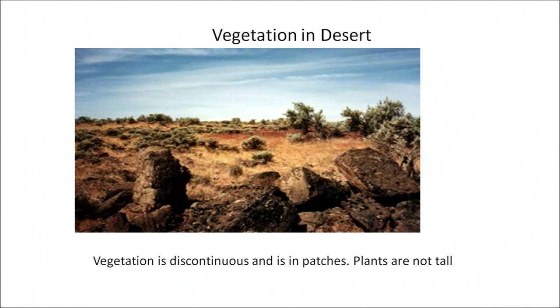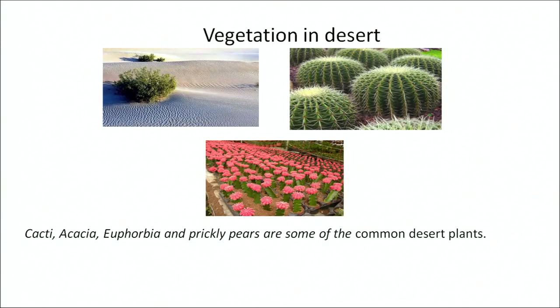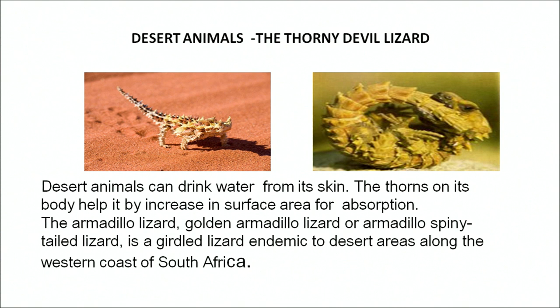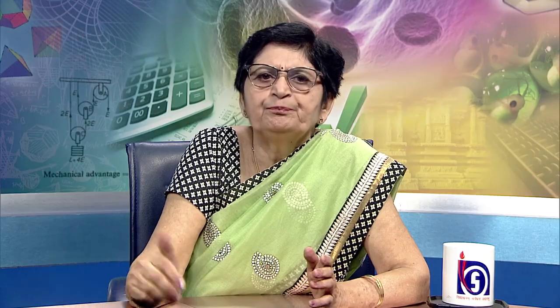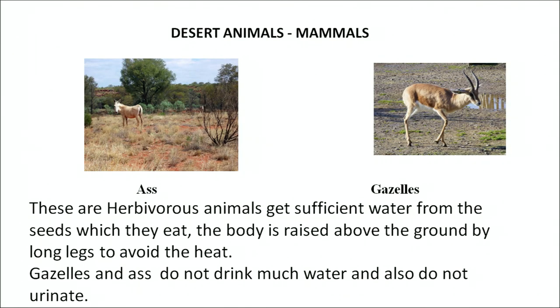These are some of the desert plants; the vegetation is very scarce with lots of rocks in between. Common desert plants include cacti, acacia, euphorbia, prickly pear, etc. Desert animals can absorb water through their skin, and the thorns on their body help by increasing surface area for absorption. The armadillo lizard and the armadillo spiny-tailed lizard are well suited to these climatic conditions. The poisonous sidewinder rattlesnake is one of the common reptiles found in the Mojave Desert area. There is also a bird which can drink water from its feathers. Herbivores in deserts get sufficient water from the plants they feed on; gazelles do not drink much water and do not urinate, in order to retain water in their body.